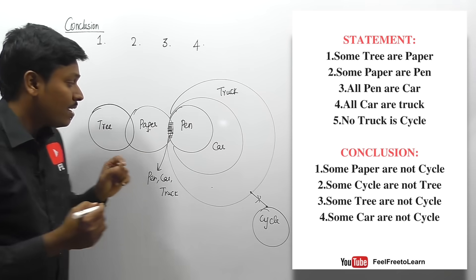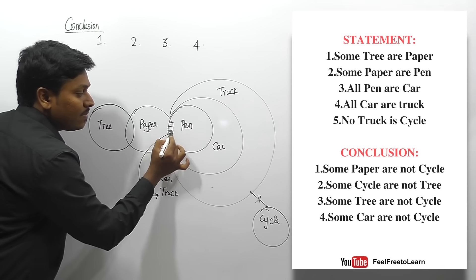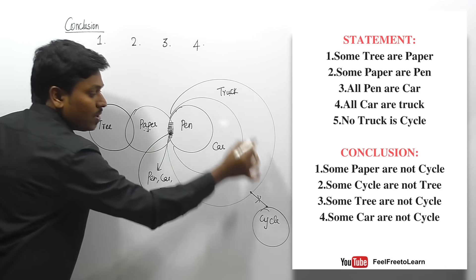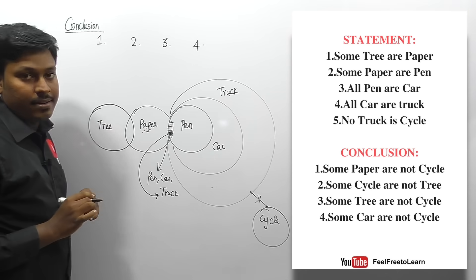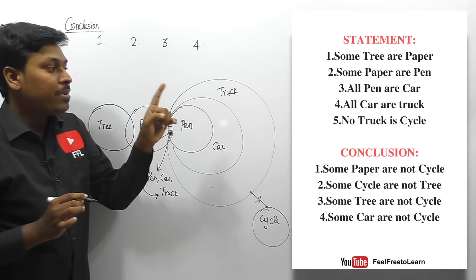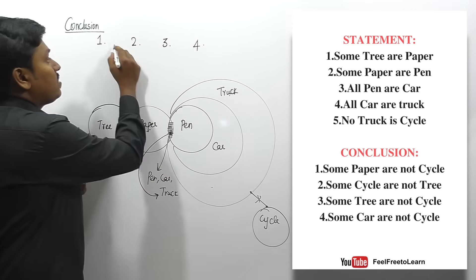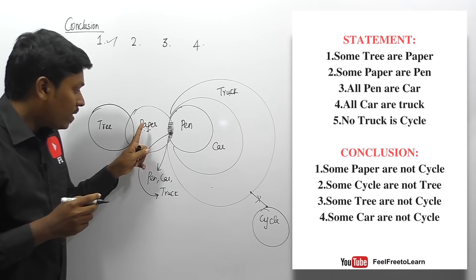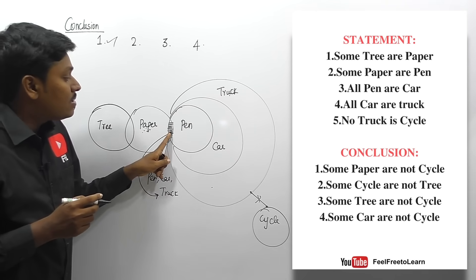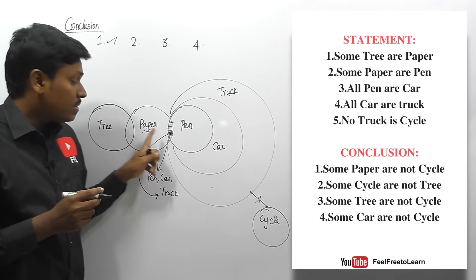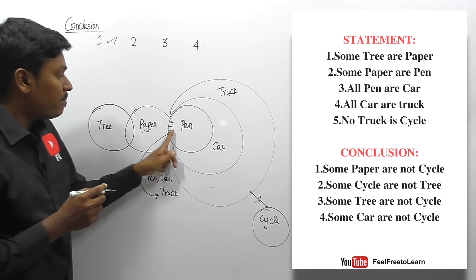They say some paper (this region) is not cycle — that is exactly correct. This region contains some truck, and we already know no truck is cycle. So there is no possible link between truck and cycle, meaning some paper (that region) is definitely not cycle. Conclusion one is true.